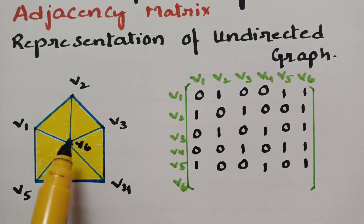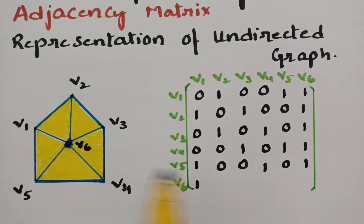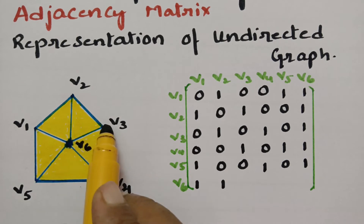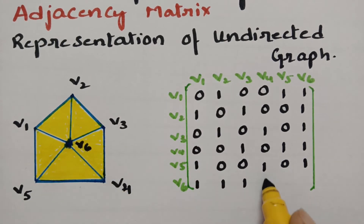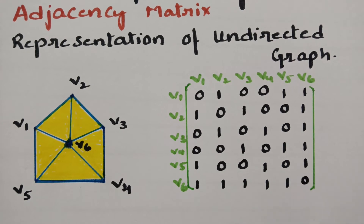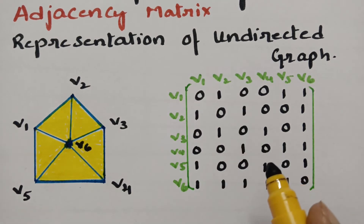Next coming to V6. V6 has edges with V1, next V2, next V3, next V4, and V5 — and the last entry is 0. So this is the representation of an undirected graph — this is the adjacency matrix.